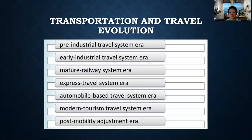First, let us have a review on the evolution of transportation and travel. As you can see in this illustration, the travel and transportation industry experienced these seven system eras. Let's discuss them one by one.